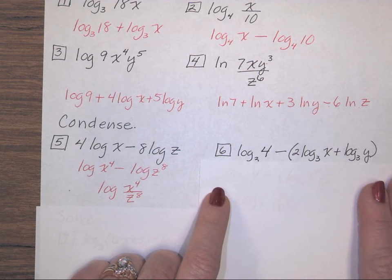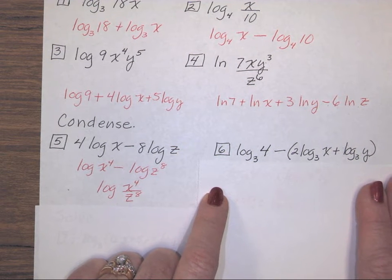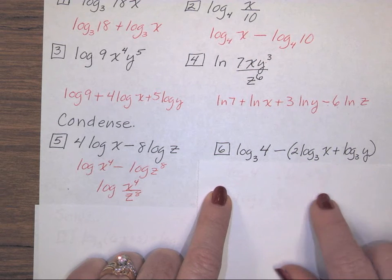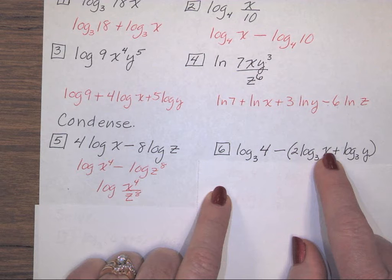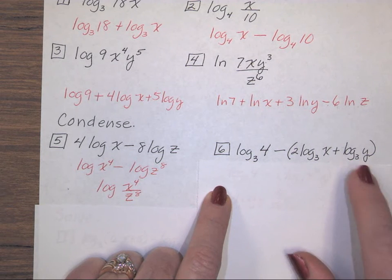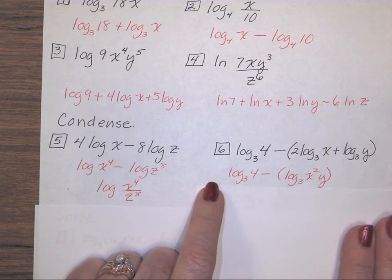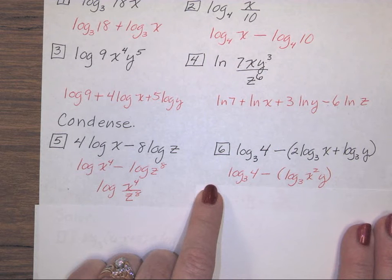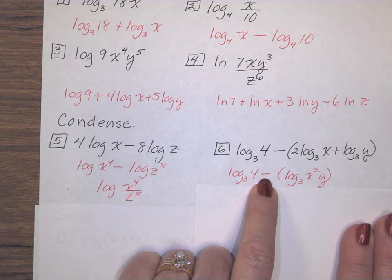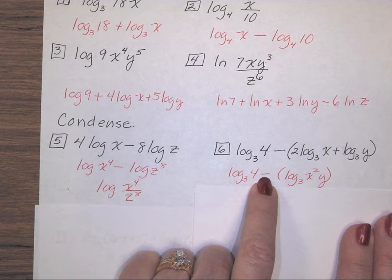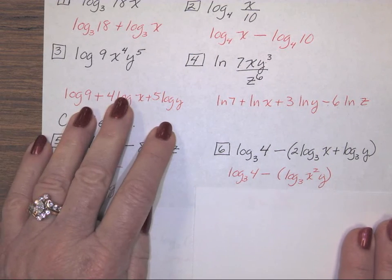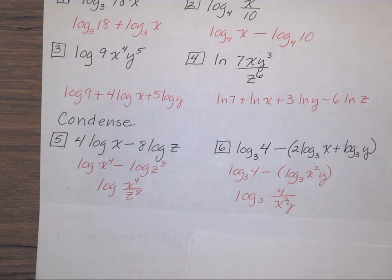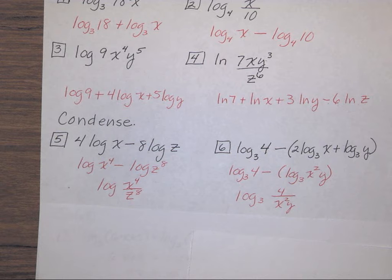Number 6. Just like any time you have parentheses, you should work inside the parentheses first. And so this 2 becomes an exponent on x. These logs were being added, so as a single log, those values are multiplied. Now, to continue, since I have subtraction, I'm going to have a fraction. This is the term that's being subtracted. This is what goes in the denominator. Log base 3 of 4 over x squared y.